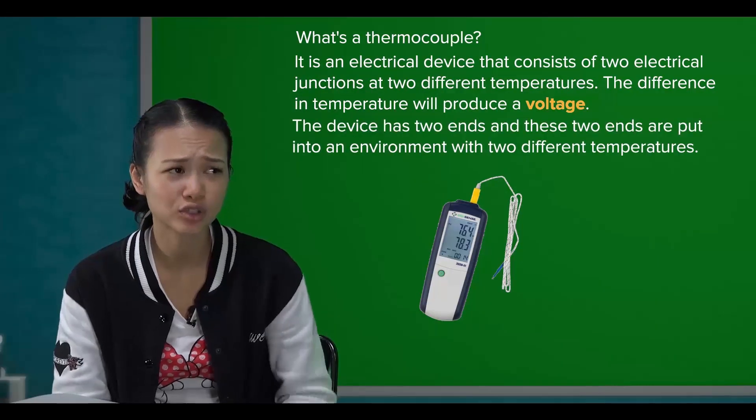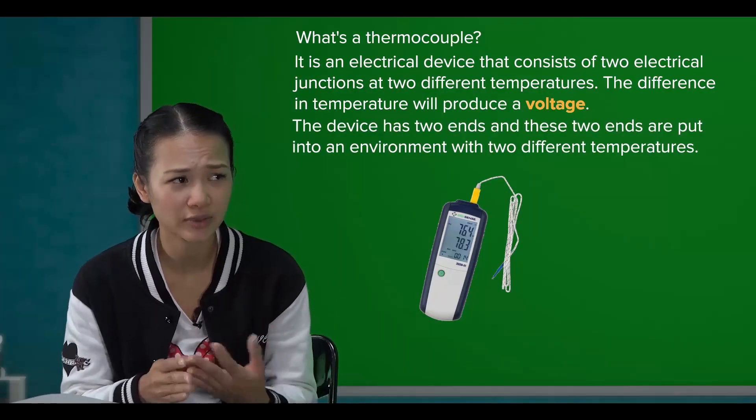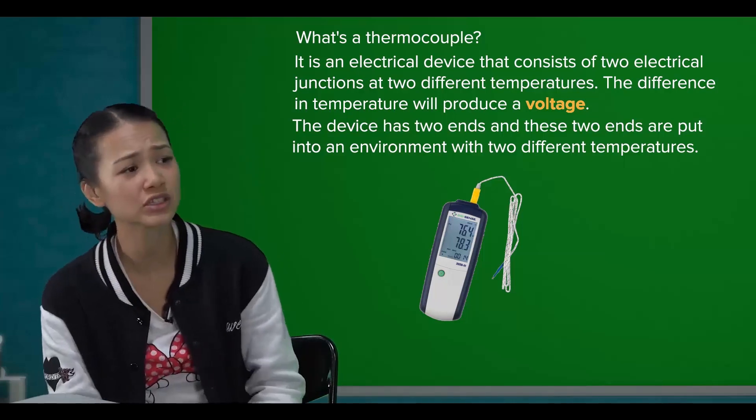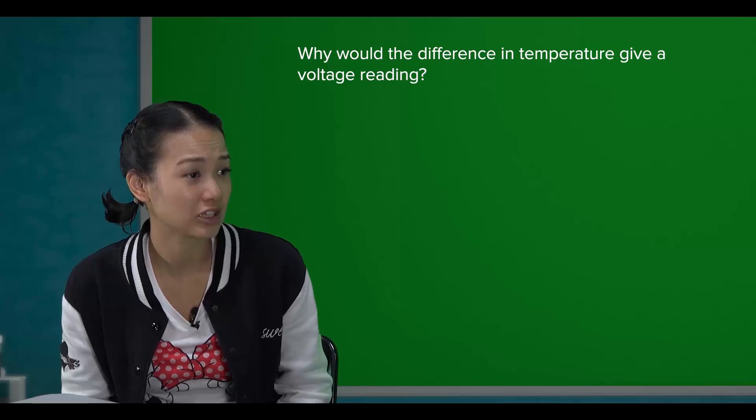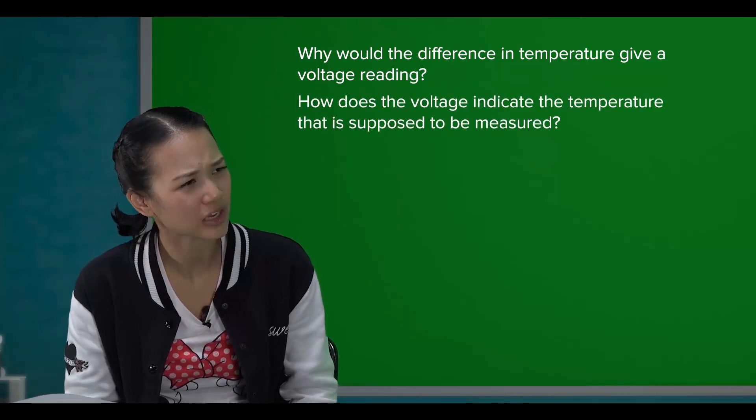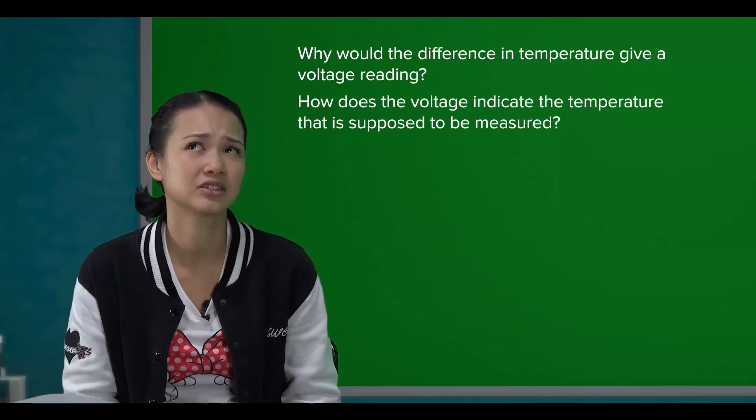So, the device has two ends and these two ends are put into an environment with two different temperatures? That's right. Why would the difference in temperature give us a voltage reading? And how does the voltage indicate the temperature that it is supposed to be measured?